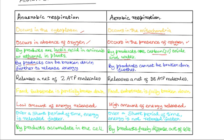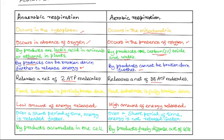The lactic acid and ethanol produced in anaerobic respiration can be broken down later to release more energy, but in aerobic respiration, the carbon dioxide and water cannot be broken down further. Anaerobic respiration is less efficient, releasing very little energy — only 2 ATP — while aerobic respiration is more efficient, releasing a lot more energy.